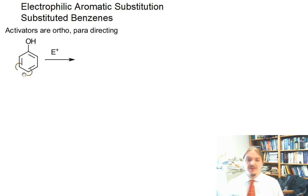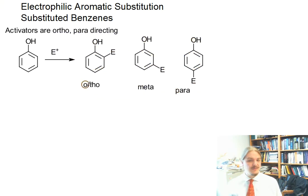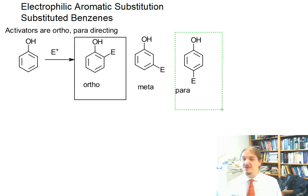So in the reaction of phenol with an electrophile, there are actually three possible regiochemical outcomes: ortho, meta, and para. You can see from my heading up here that I've already indicated that activators are ortho and para directing.